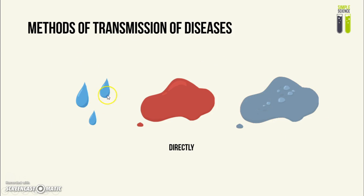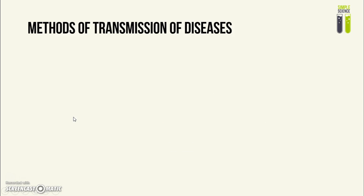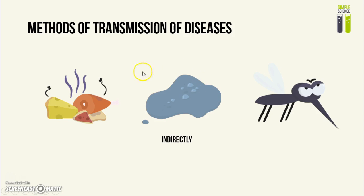Interestingly, airborne droplets also link into an indirect method of transmission via the air. You can also become infected by animals — for example, malaria is transmitted via mosquitoes. Contact with unsanitary surfaces or eating unsanitary food can also cause diseases. For example, if you eat food contaminated with faeces from someone who has cholera, you would end up having cholera too.